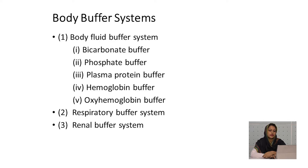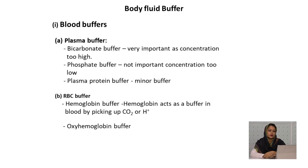Now the classification of body buffer systems. First, the blood buffer system contains: bicarbonate buffer, phosphate buffer, plasma protein buffer, hemoglobin buffer, and oxyhemoglobin buffer. There are also respiratory buffer and renal buffer.